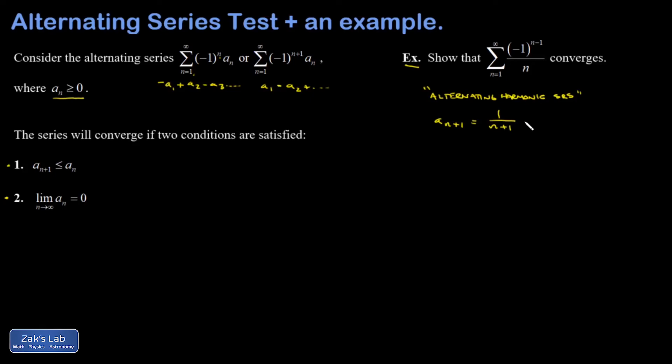Remember, the an's are just the positive parts. It doesn't include that alternating sign. And an is just 1 over n. And because the denominator is bigger on 1 over n plus 1, that's clearly less than 1 over n. So we satisfied our first condition.